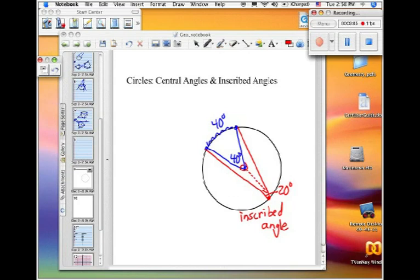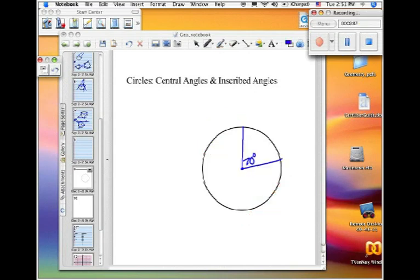Let's look at another example. In this example, the central angle is 70 degrees, which results in the arc of that circle also being 70 degrees. The central angle and the measure of the arc are always the same. However,